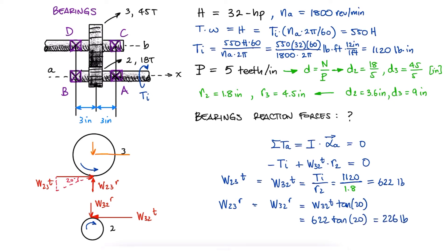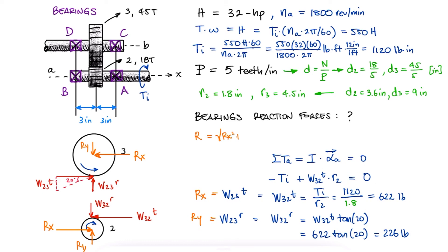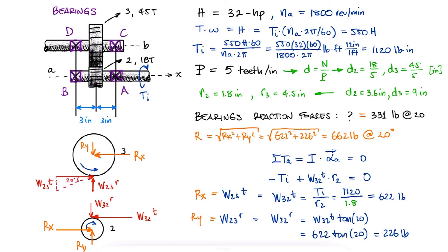From a sum of forces in the x and y directions, we see that the reaction of shaft B on gear 3 in the x direction equals the tangential component of the force between gears 2 and 3, and the same is true for the reaction of shaft A on gear 2. The reaction in the y direction equals the radial component of the interaction force. Therefore, the overall reaction force equals the hypotenuse value at an angle of 20 degrees. Since each bearing is 3 inches away from the gear, the reaction force at each bearing is half of the shaft reaction force.